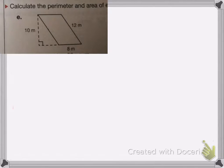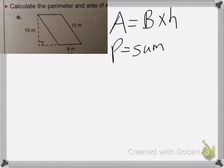On this one, we want to find the perimeter and the area. So remember, the area is base times the perpendicular height, and the perimeter is the sum of all the sides.